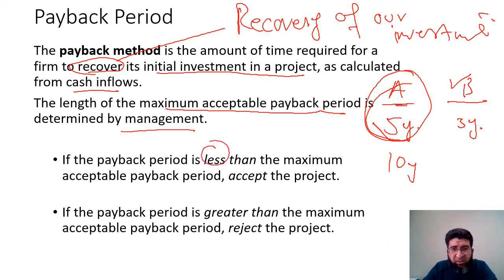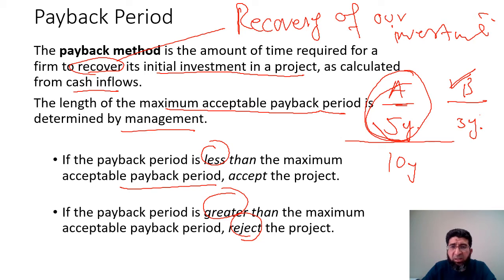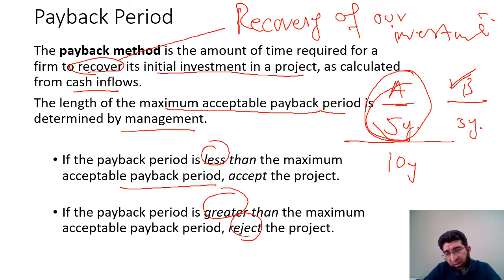The decision criteria: if the payback period is less than the maximum acceptable payback period, accept the project. If it is greater, reject the project. For independent projects, management sets the maximum acceptable payback period — it is general company policy that they do not accept investments beyond a certain number of years. The project's recovery time is then compared against that maximum acceptable period.